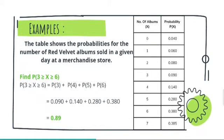The first example is: find the probability of 3 ≤ X ≤ 5. Hence, the values we're going to add are the probabilities of 3, 4, 5, and 6. Their corresponding numbers are 0.090 + 0.140 + 0.280 + 0.380. Adding all this up equals 0.89.